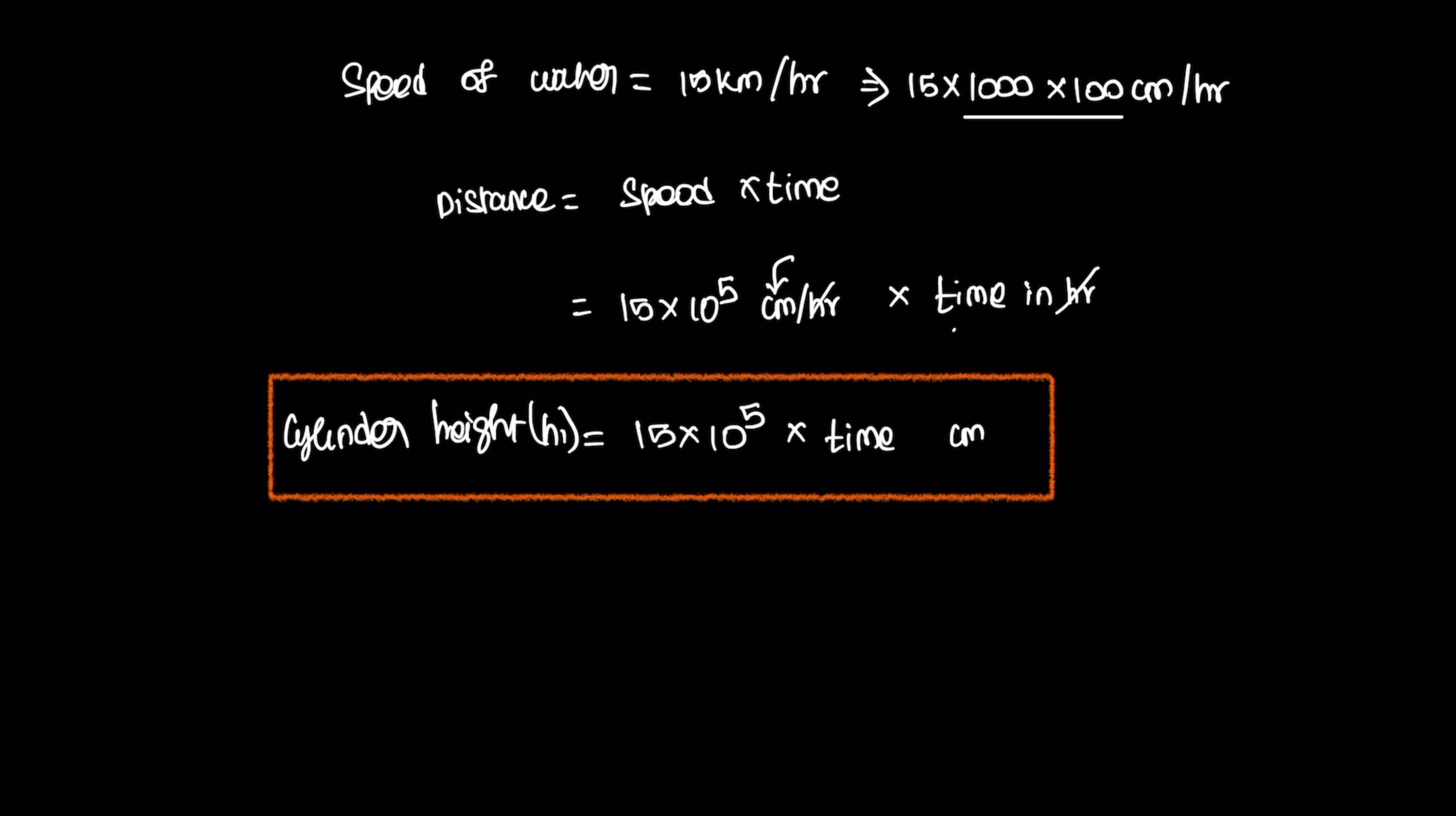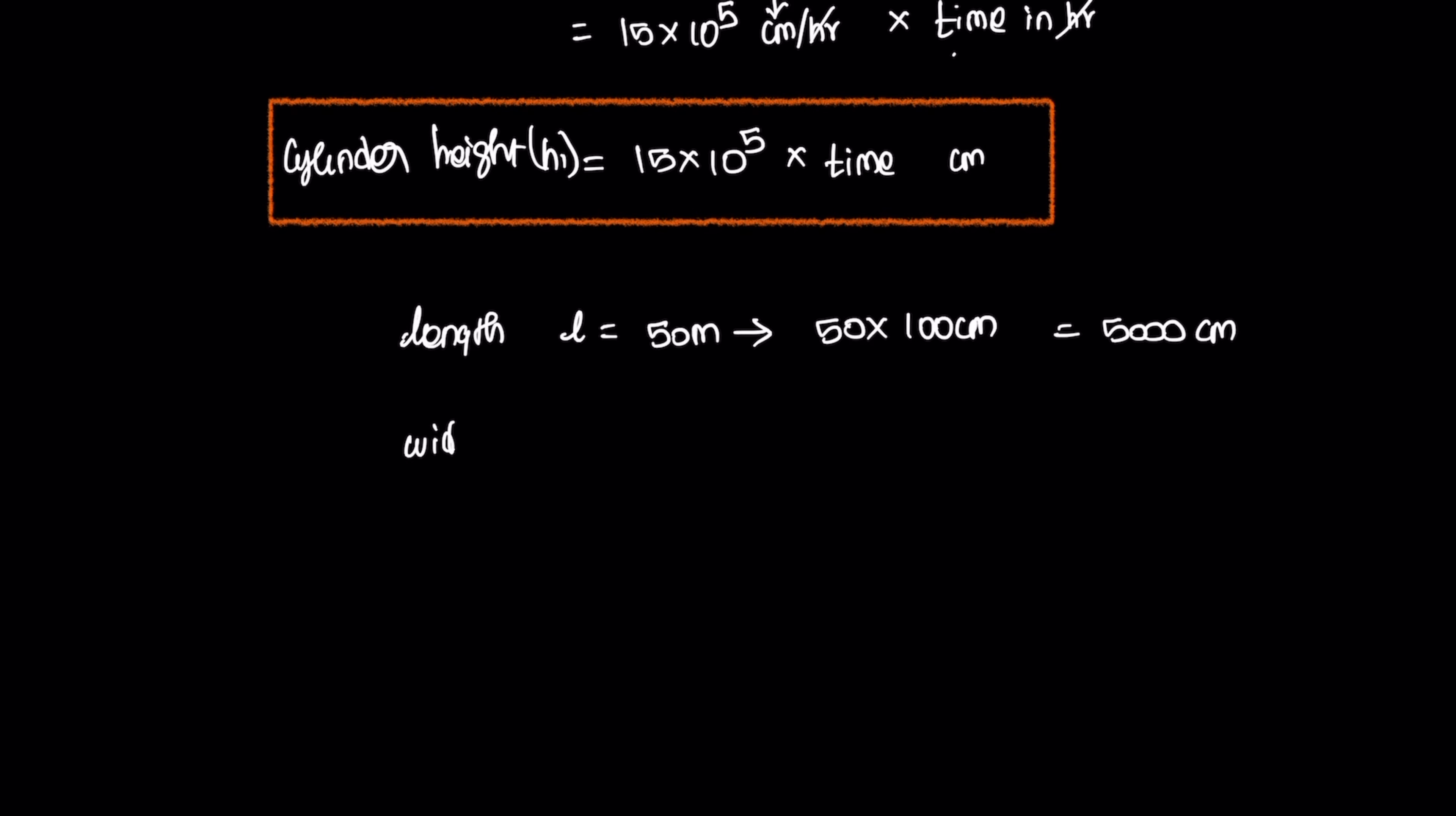Length is equal to 50 meters. Converting to centimeters: 50 times 100 equals 5000 centimeters. Width w is equal to 44 meters, which is 44 times 100 equals 4400 centimeters. Height of water level is 21 centimeters.